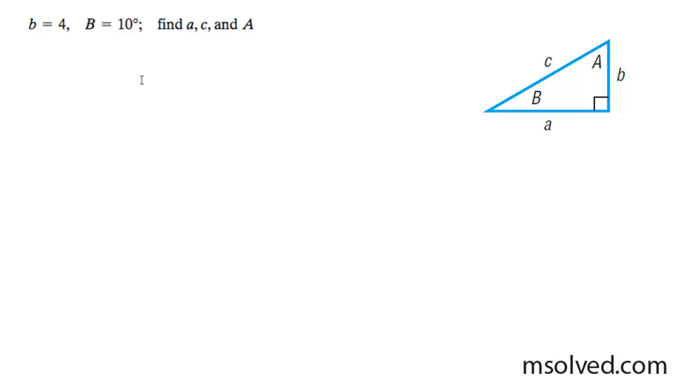Let's go ahead and solve for the triangle. So I know my side b here is equal to 4, and I know that B is equal to 10 degrees.